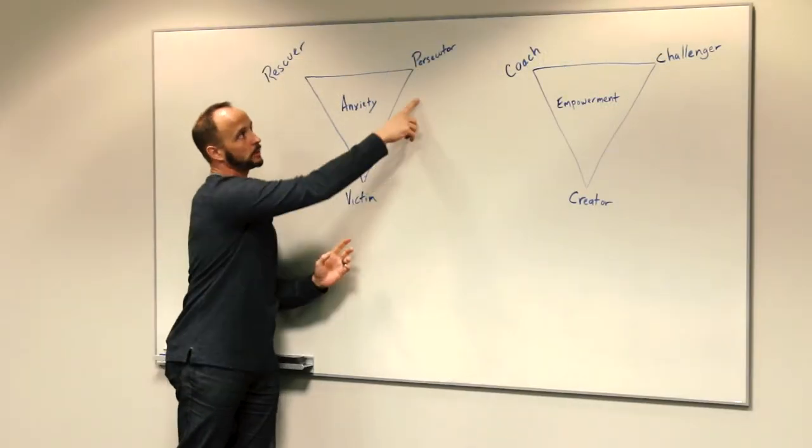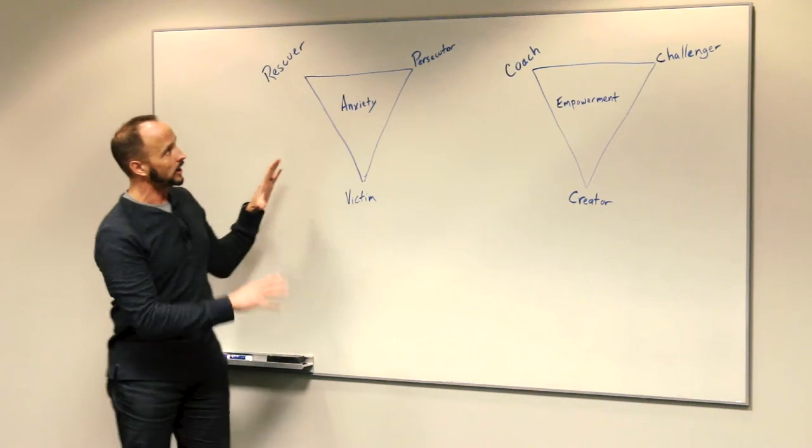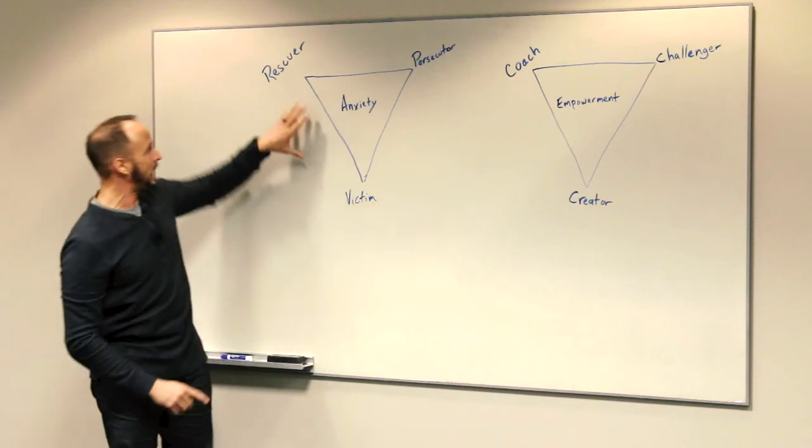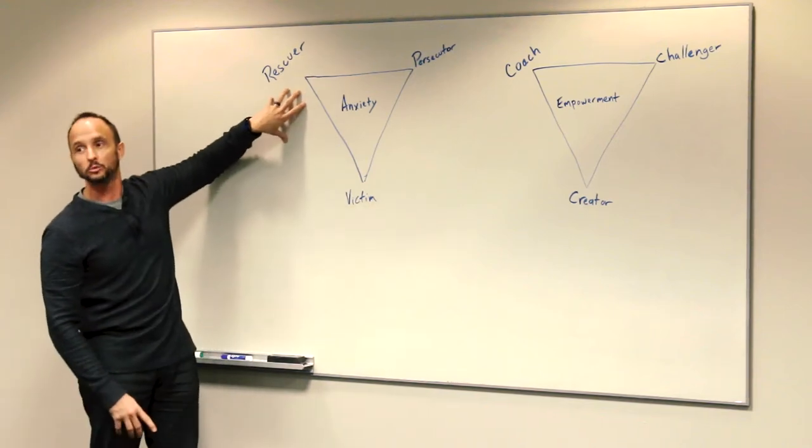Both the victim and the persecutor are in a relationship with each other that's antagonistic, but then they also have this third person that we'll call the Rescuer.